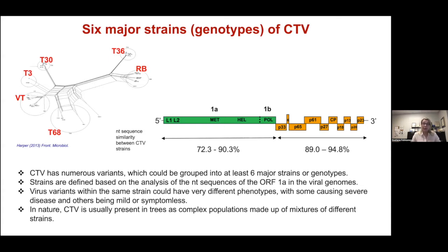Interestingly, virus variants belonging to the same virus strain can have very different phenotypes — some variants cause disease while others belonging to the same strain can be very mild or even symptomless. In nature, CTV is usually present in trees as complex populations made up of mixtures of different strains. The coexistence of two, three, or even more different strains in the same trees has been repeatedly reported by many different research groups in many different citrus-growing regions, and for a while there was no explanation for this interesting phenomenon.